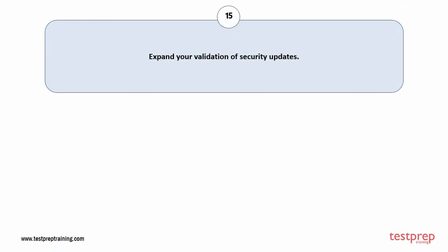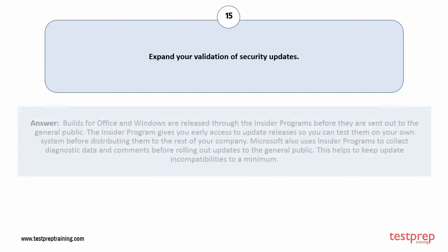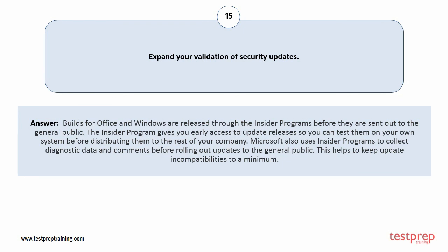Question number 15: Expand your validation of security updates. Builds for Office and Windows are released through the Insider programs before they are sent out to the general public. The Insider program gives you early access to update releases so you can test them on your own system before distributing them to the rest of your company. Microsoft also uses Insider programs to collect diagnostic data and comments before rolling out updates to the general public, which helps to keep update incompatibilities to a minimum.